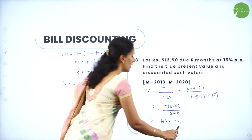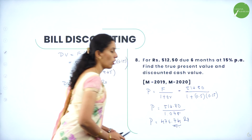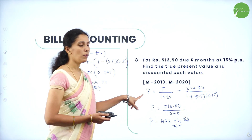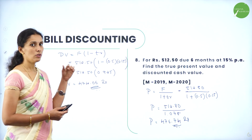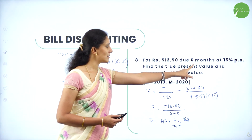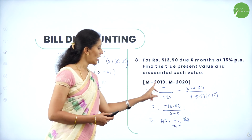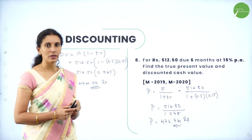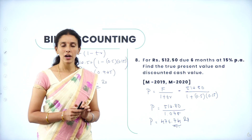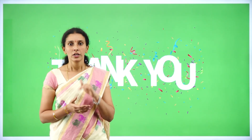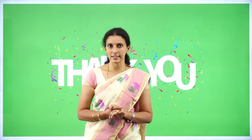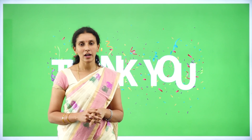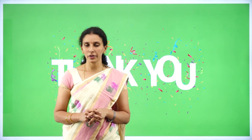So Rs. 474.06 is the discounted cash value and Rs. 476.74 is the true present value. Using the formulas for true present value and discounted value, since we have face value, time, and rate of interest, we can directly substitute and calculate. In bill discounting, formula is very important — learn the formula, substitute directly, and you will get whatever value is asked. These are the questions you may expect from this chapter. We will meet you in the next session with a new chapter. Until then, keep watching, keep learning, keep exploring. Thank you.